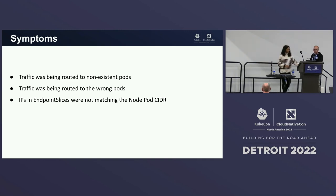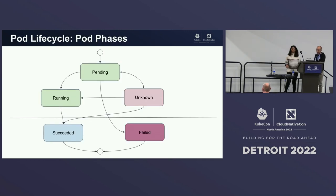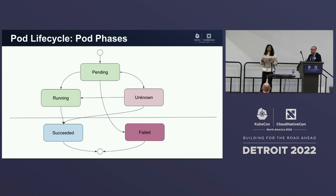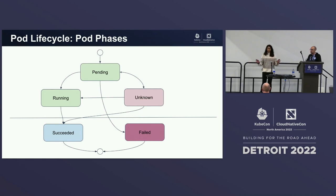Taking a step back from those symptoms, I went and looked and thought: there is nothing wrong. The network is fine, the endpoint slice controller is fine, we didn't make any changes in OSS, it can't be our fault.